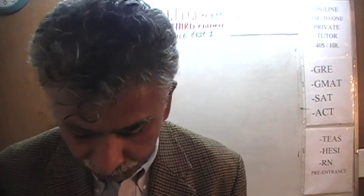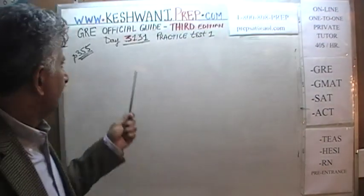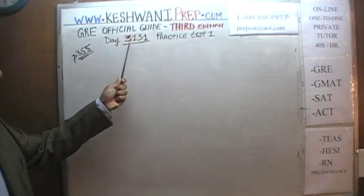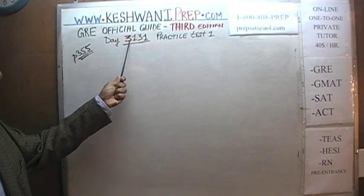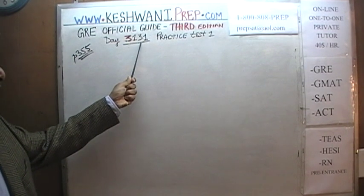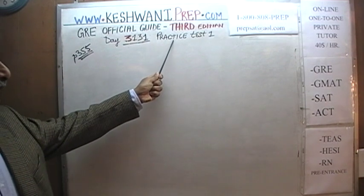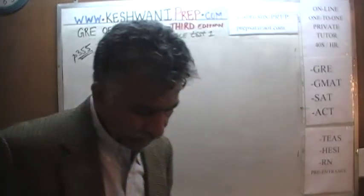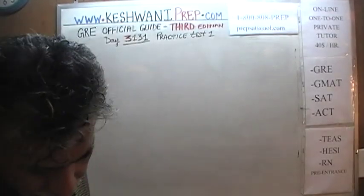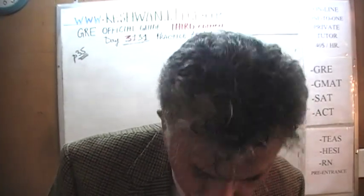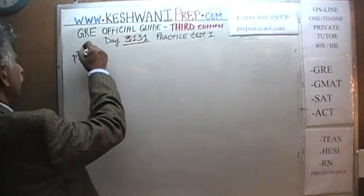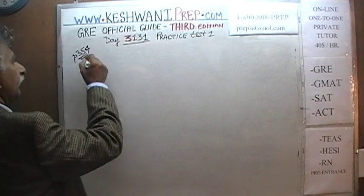Today is our lesson number 131 — Day 3131. The 3 is to signify the fact that we are in the third edition. Third edition, day 131. Today we will begin the practice test that you find on page 354, section number 5.